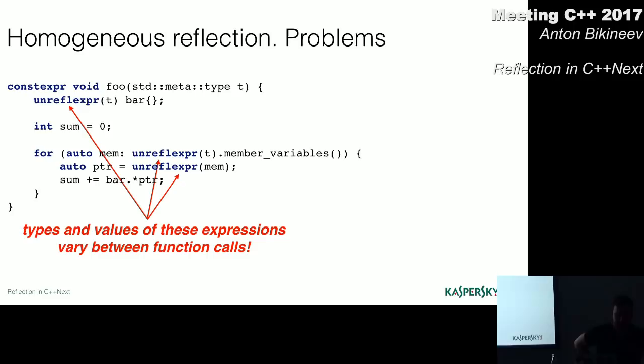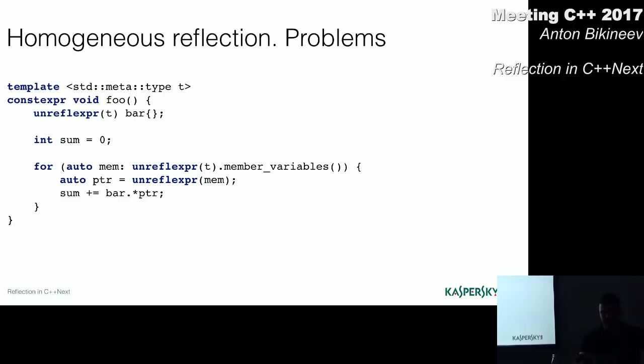I played around a bit with this idea of homogeneous reflection and started implementing in clang. And it worked quite well, I should say, until I ran into a tiny problem. In C++, you know every expression must have a type, and this type is defined at the parsing stage. But consider this example. What is the type of the variable bar?